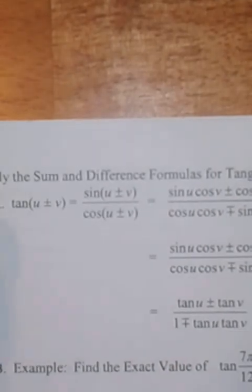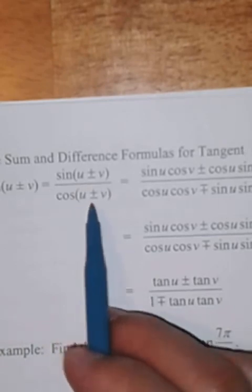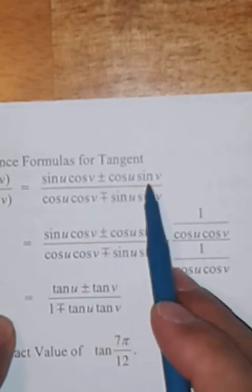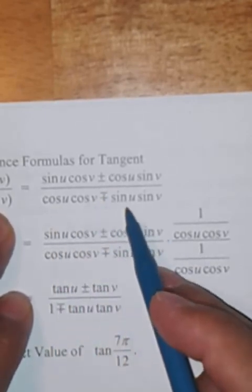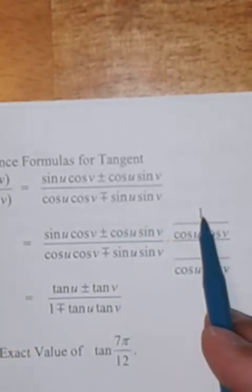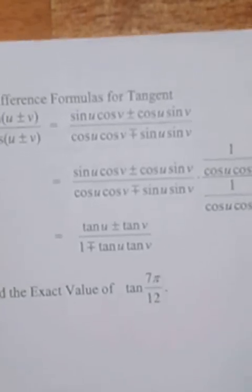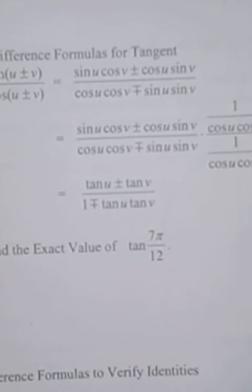Applying sum and difference formulas to tangent: tangent of (u ± v) equals sine(u ± v) over cosine(u ± v). Expanding numerator and denominator and multiplying top and bottom by one over (cosine u cosine v), we get tangent of (u ± v) equals (tangent u ± tangent b) over (1 ∓ tangent u tangent b). An example asks for the exact value of tangent(7π/12) — we'll break that into a u plus or minus v in class.